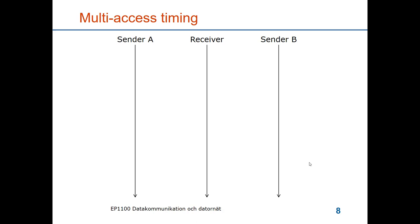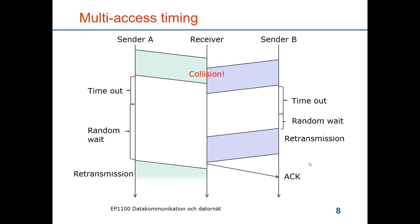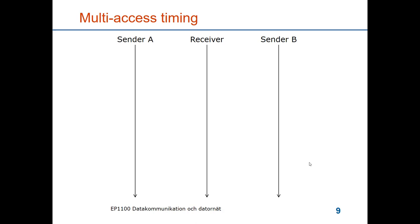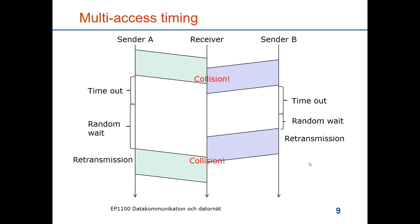Let's look at how that works. After a collision, sender A times out and sender B times out, each waits a random time and then retransmits. In one case, sender A drew a longer random time than sender B, so sender B transmits its frame first. However, in another case, even with random waiting times, there can still be a collision. So the random waiting time reduces collisions but does not eliminate them.